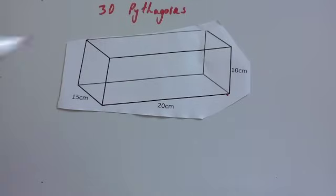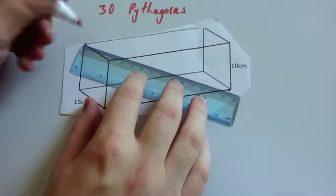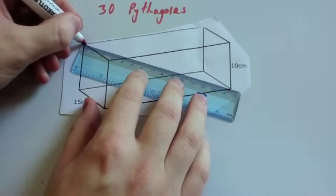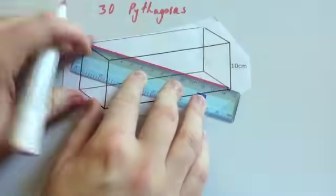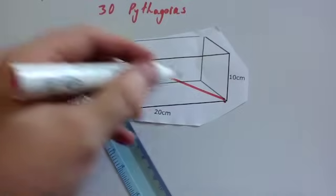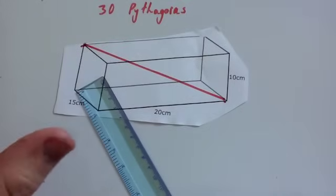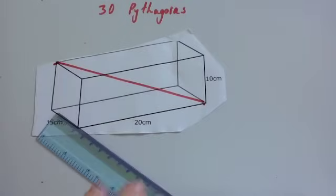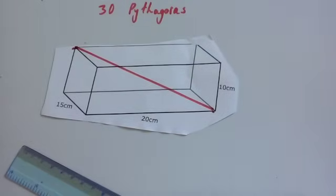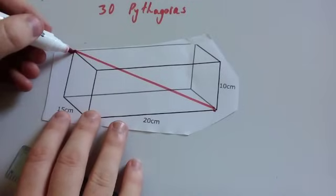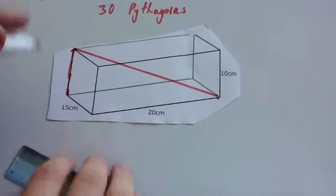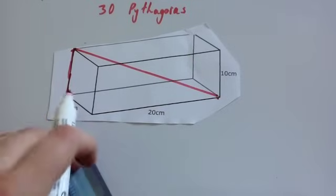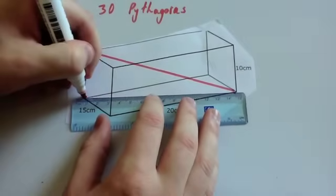If I want to work out the length of this diagonal, let's draw that on — the length they want us to work out, going through the shape from the top corner to the other corner. Imagine you're in a room: it's from the top corner to the bottom opposite corner. To find that length, I need to figure out what shapes are involved. I've got the vertical side, and I need to find the length of the diagonal along the bottom.